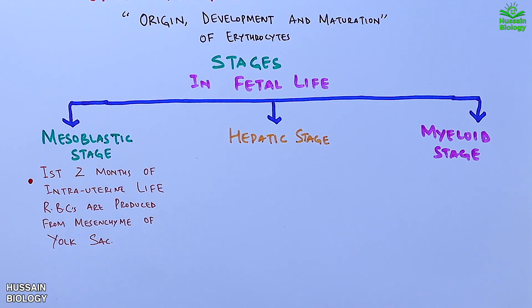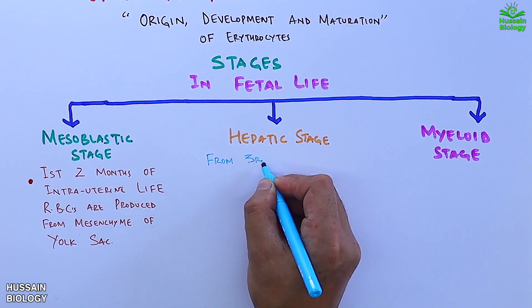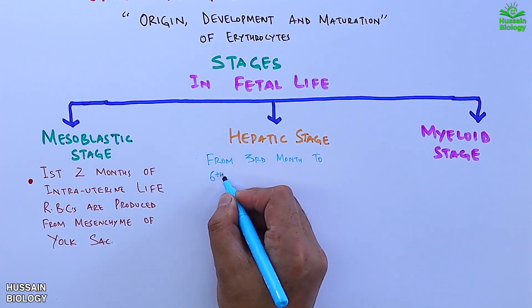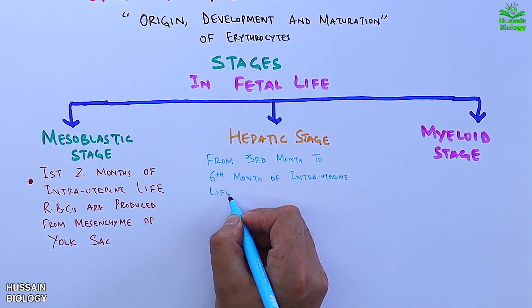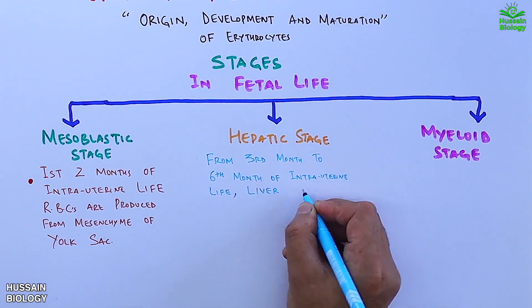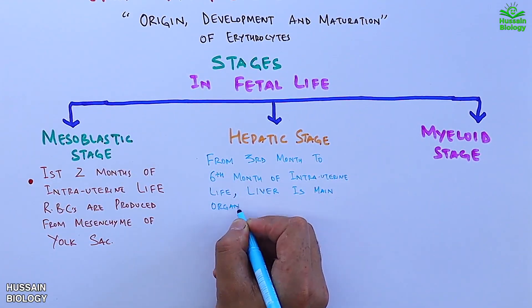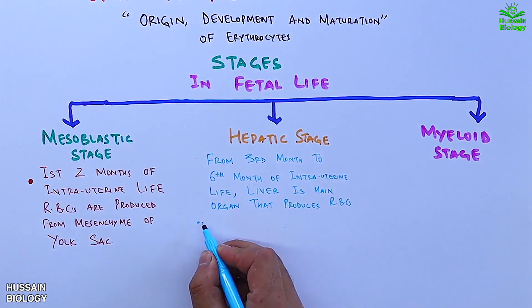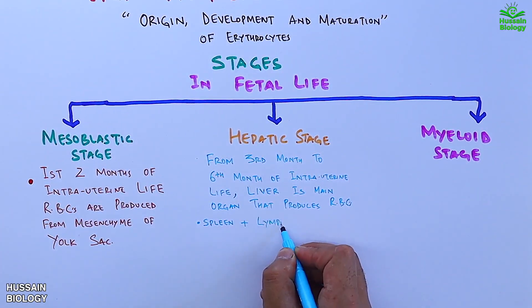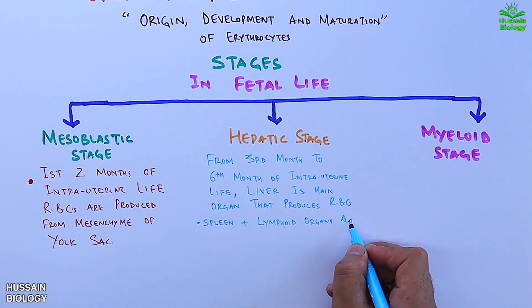The second is the hepatic stage, starting from the third month to the sixth month of intrauterine life, where the liver is the main organ that produces erythrocytes, but the spleen and lymphoid organs are also involved.